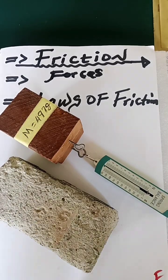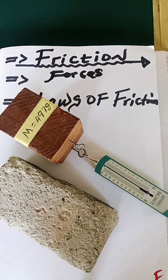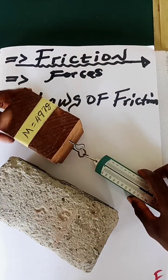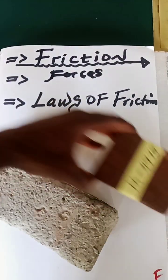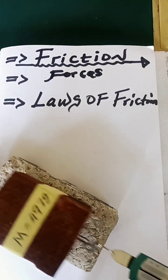Law number three: friction is dependent on the nature of the surface. It means friction will be less on a smooth surface and friction will be greater on a very rough surface.